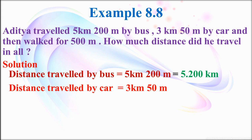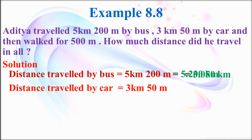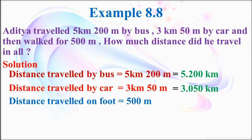As you know, 1 meter equals 1 by 1000 kilometer. So 50 divided by 1000 kilometer equals 0.050 kilometer. Add with 3 kilometer to get 3.050 kilometer. Then for the distance traveled on foot — 500 meter — convert to kilometer: 500 divided by 1000 equals 0.500 kilometer.